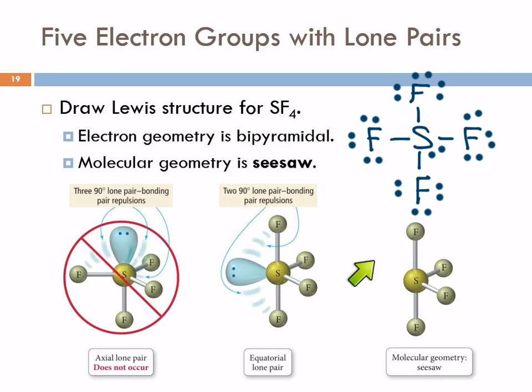So this is the lone pair. Then if we erase that, make it invisible, we get this structure, and that's called a seesaw geometry, another really technical name because if you tip it on its side, it looks like a seesaw, right? You're going to have to use your imagination on that one. I have some models we can play with later.